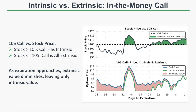Between 73 and 51 days to expiration, the stock price is below $105, so the call has no intrinsic value and its price is all extrinsic. Around 46 days to expiration, the stock rises to $115, giving the 105 call $10 of intrinsic value — visible on the lower graph. Even with $10 of intrinsic value, the option's price is $12, meaning $2 of extrinsic value remains. At expiration, the stock is around $111, giving the call $6 of intrinsic value and zero extrinsic.